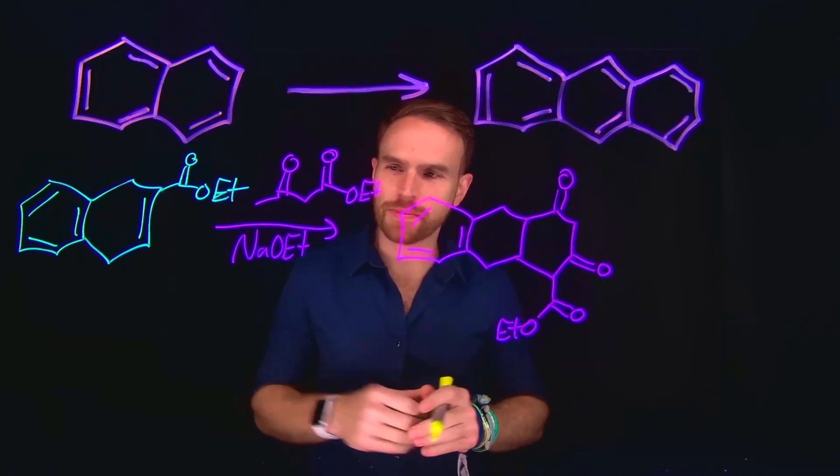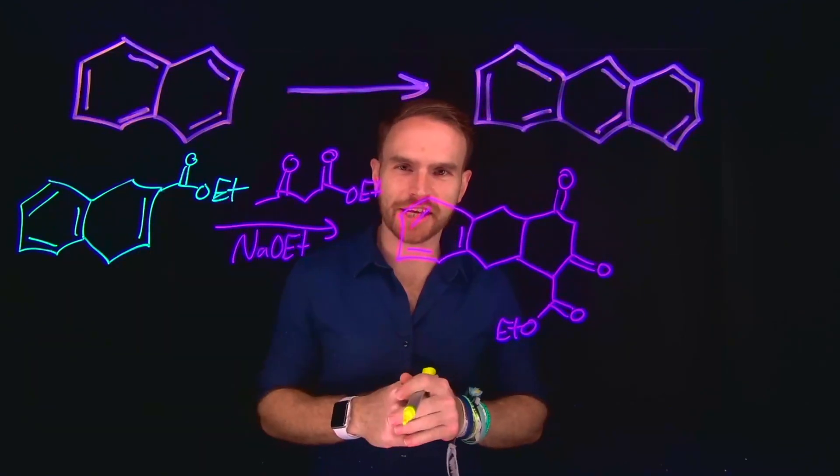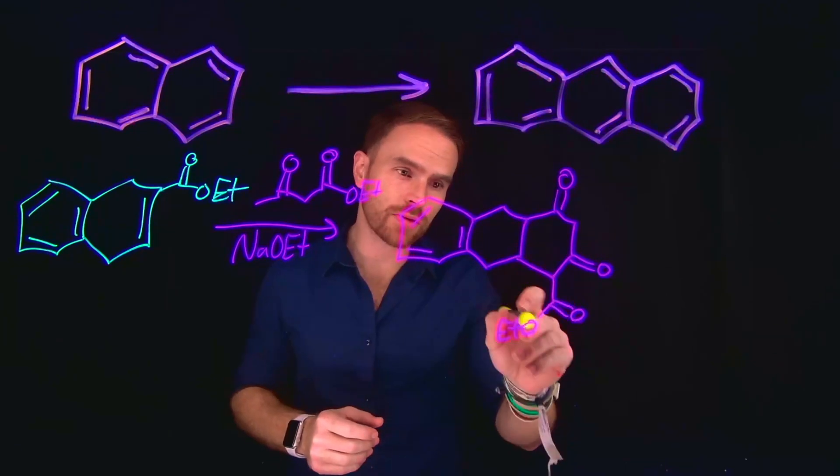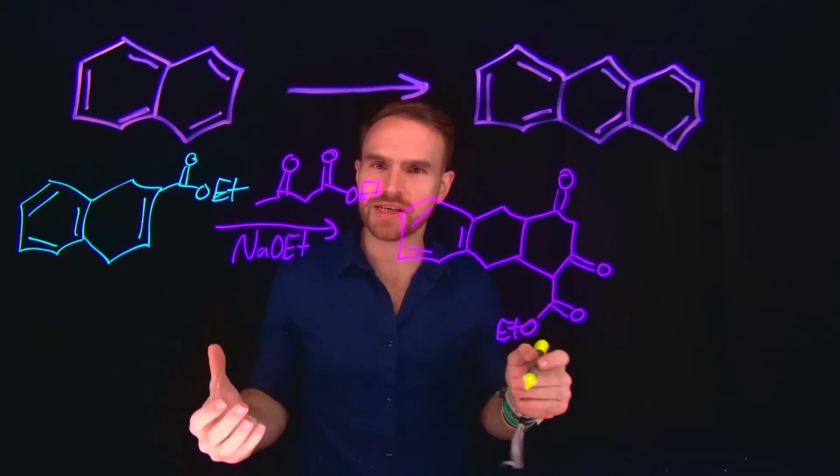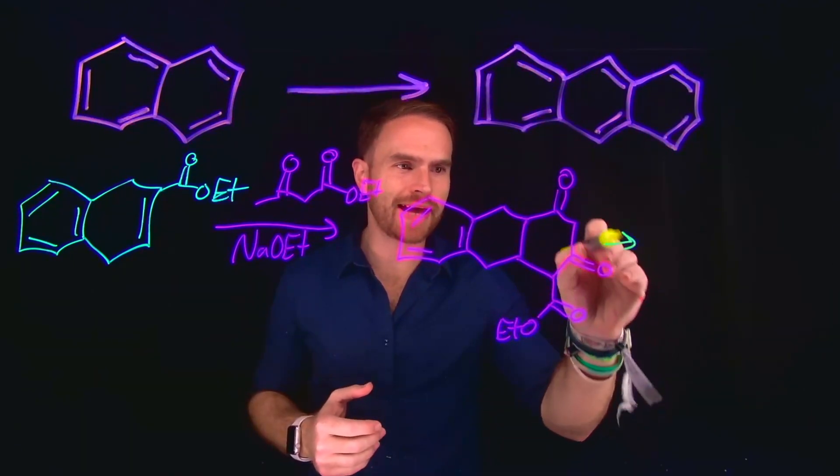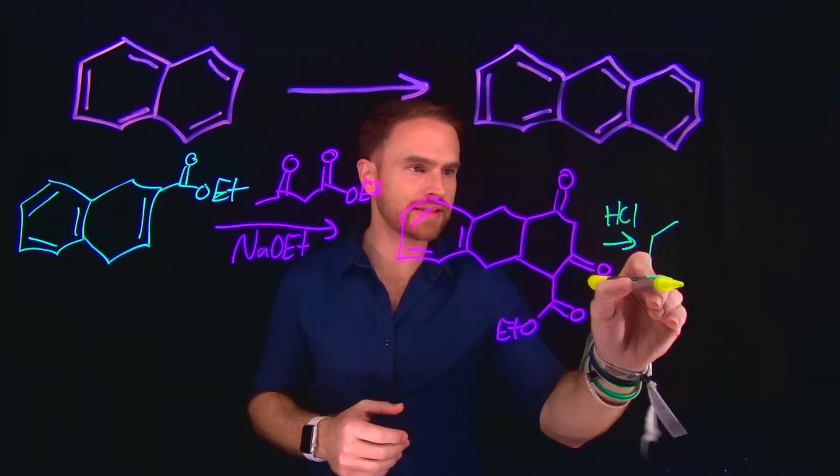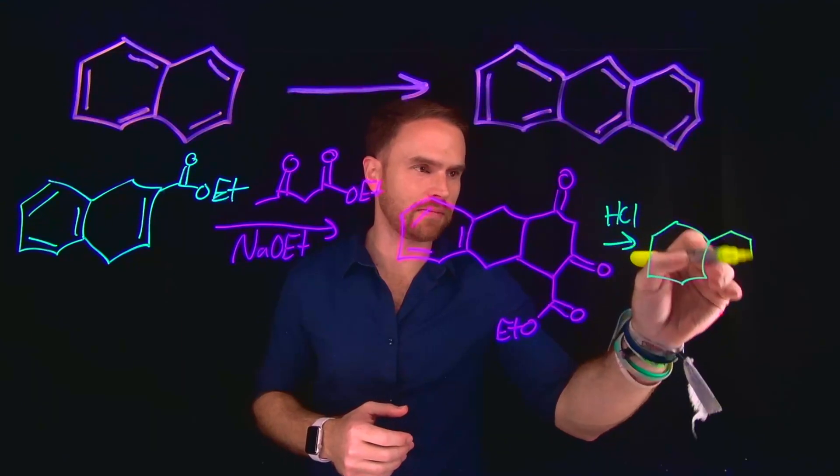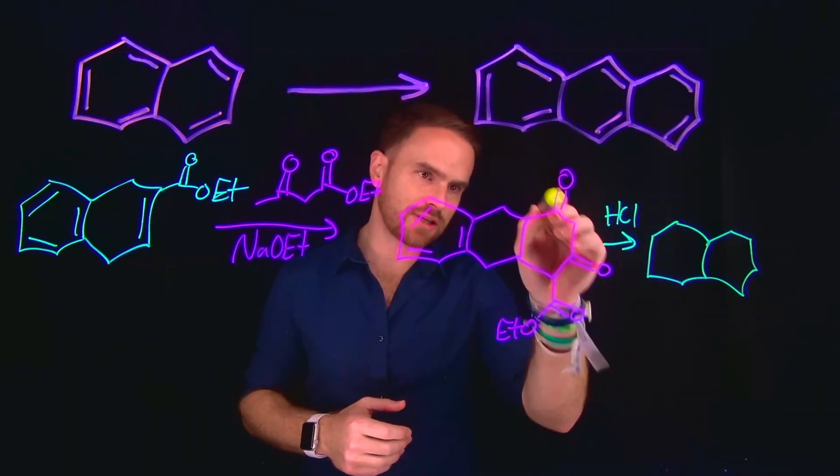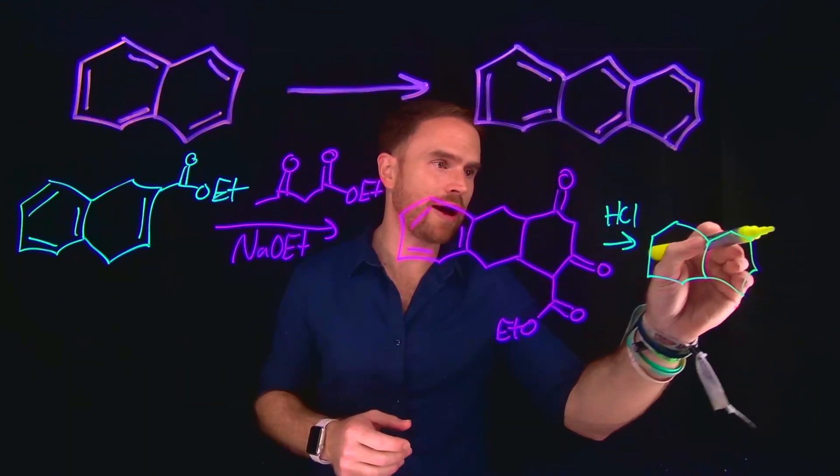This is the product of that transformation, where we did a Dieckmann cyclization. Now, importantly from here, we can remove this ester group just through the addition of an acid. So by adding something like hydrochloric acid, we can remove this ester group to give us our three ring system, which will still contain two ketones which we'll have to deal with shortly.